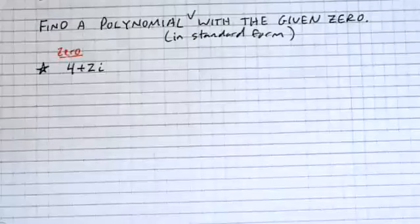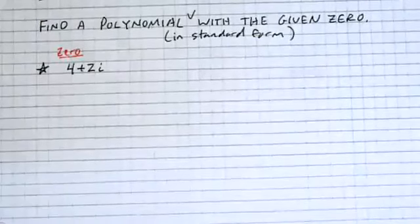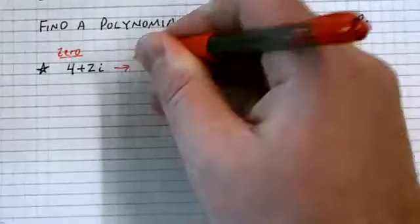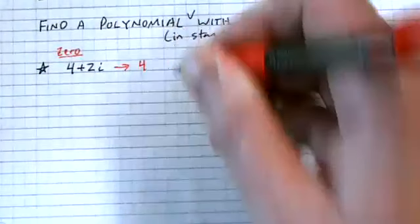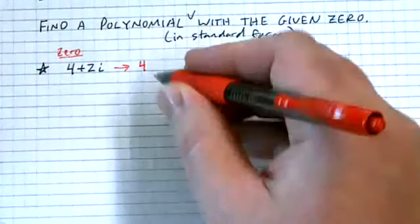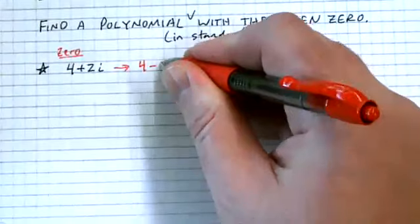So if I tell you that 4 plus 2i is a zero, then there's something else going through your head — other information that's out there that I have not told you that must be true. What else must be true? Complex zeros come in conjugate pairs. So if 4 plus 2i is a zero, then 4 minus 2i is also a zero.